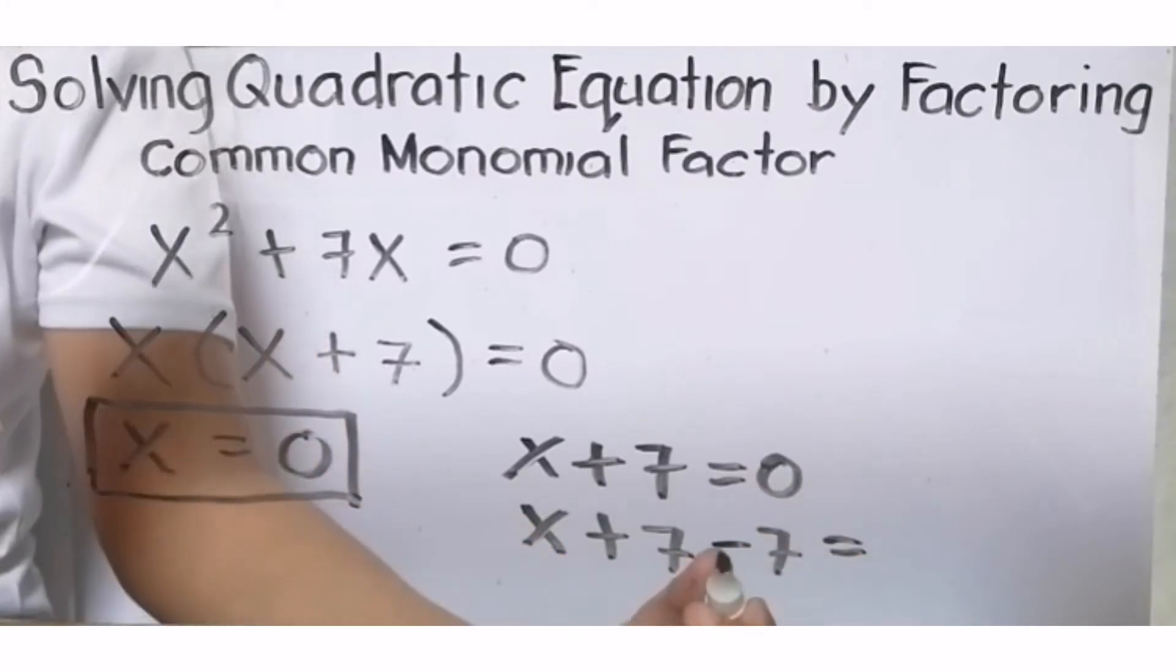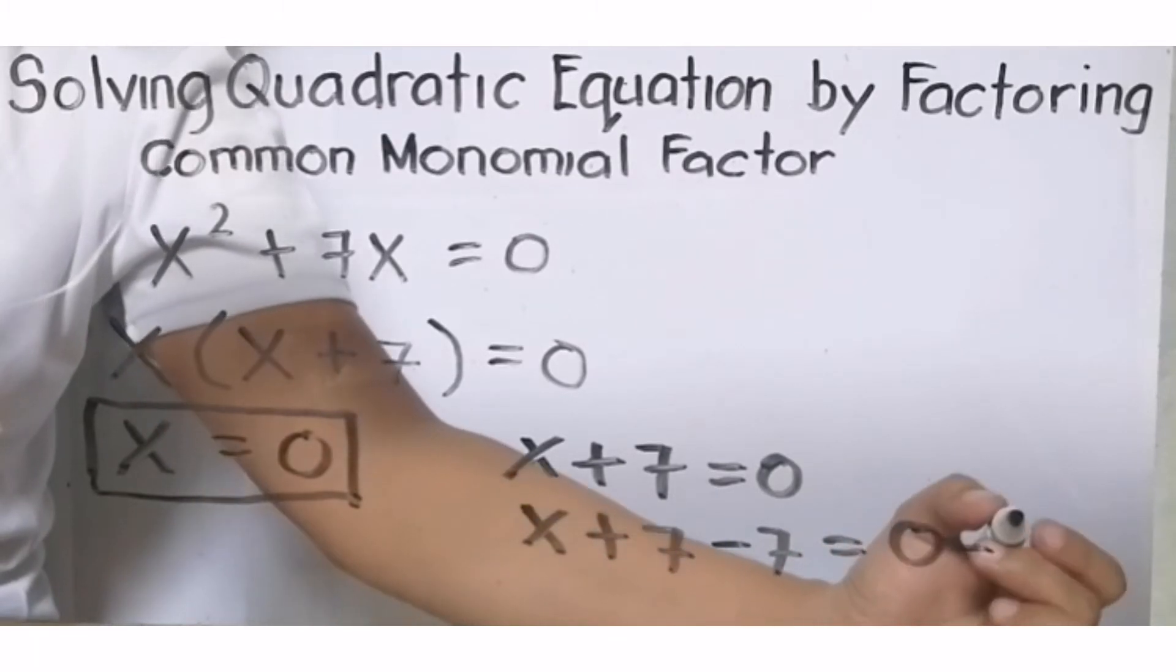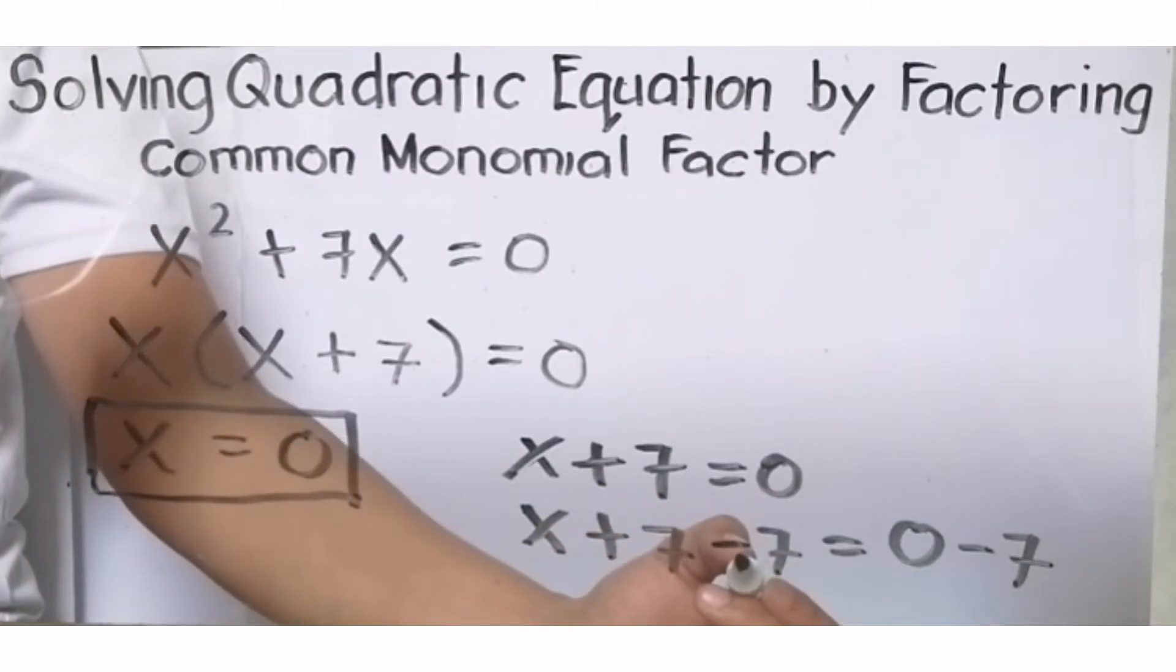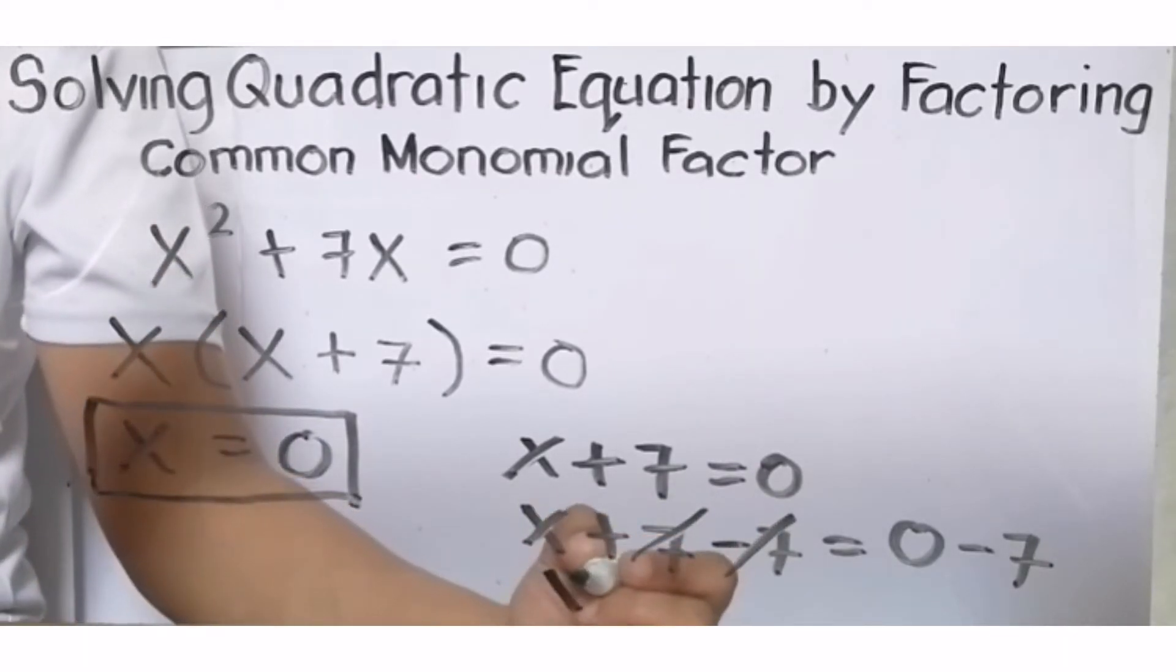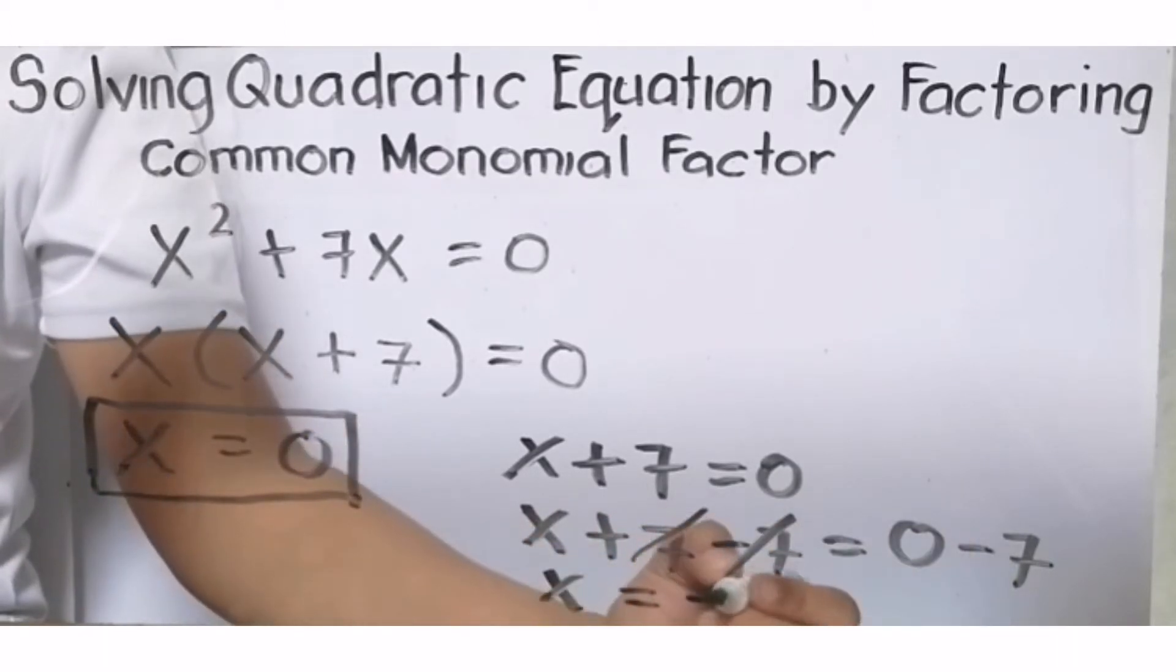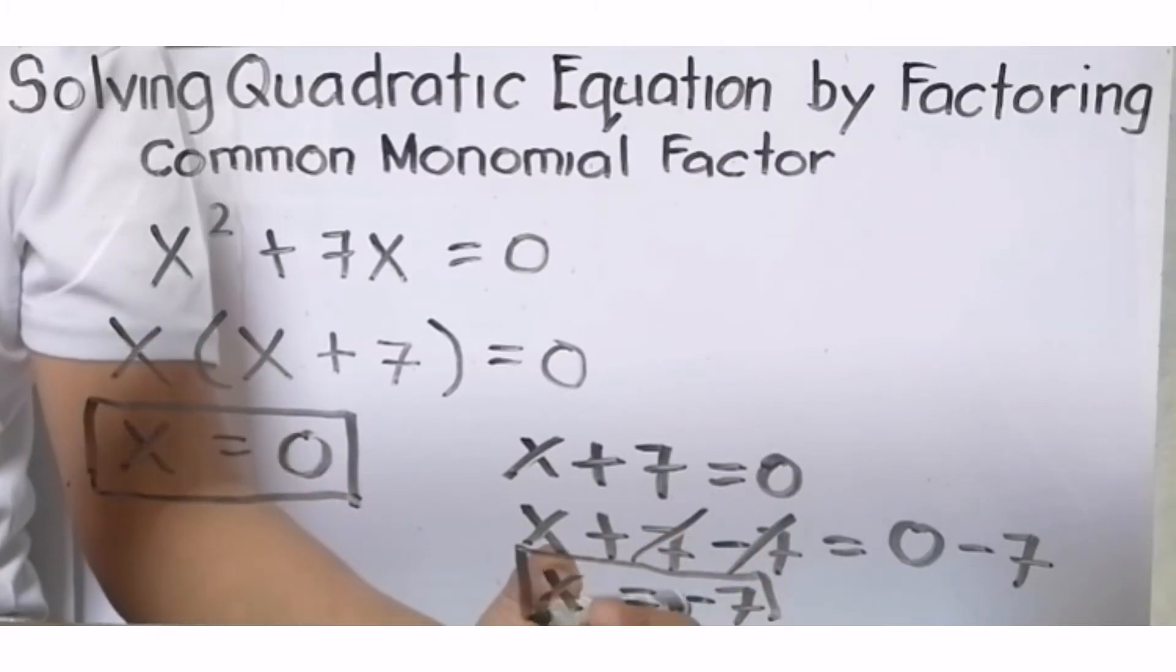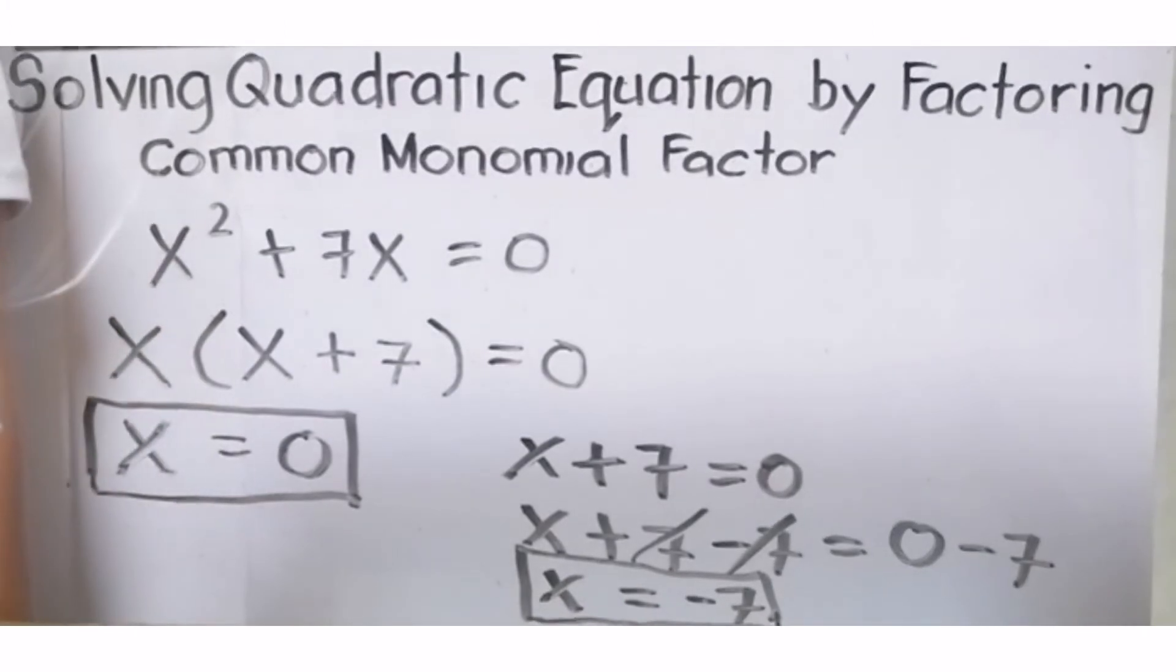Take note, kung anong in-add mo dito sa left side of the equation, ganun din dapat ang i-add mo sa right side of the equation. Positive 7 plus negative 7, ito ay equal to 0. Ang ating final answer is x = 0 - 7 is -7. Ang isa sa mga factor natin ay x = -7.